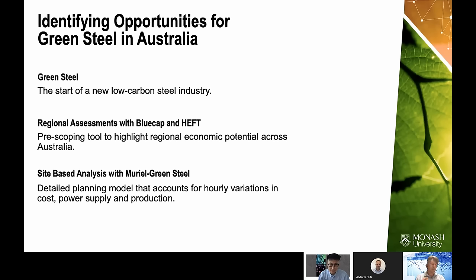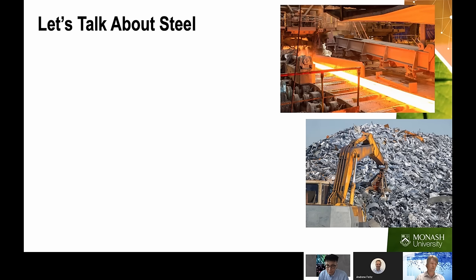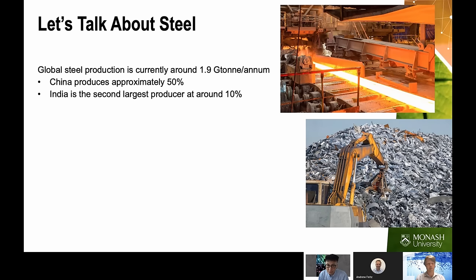When we think about the energy transition, we focus on things like power generation or transportation, but heavy industry — particularly steel — is a big part of that and too often gets ignored. Globally we produce around 1.9 gigatons of steel each year. About 50% is produced in China and about 10% in India, with the remainder scattered around the world.